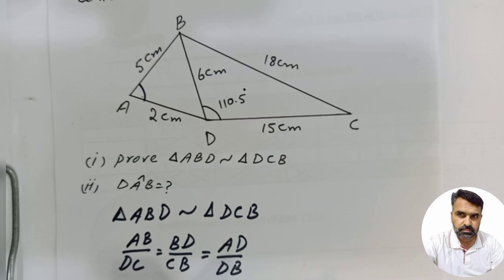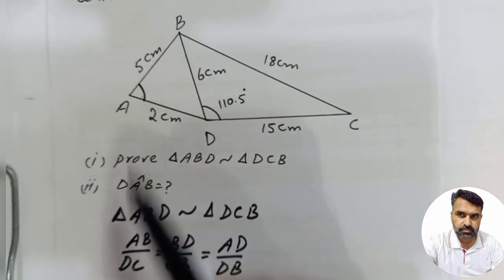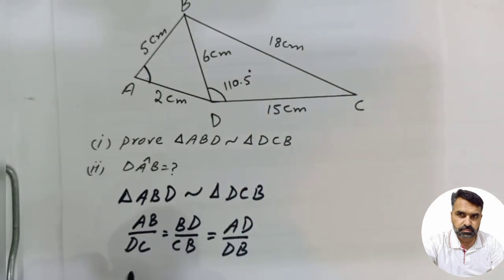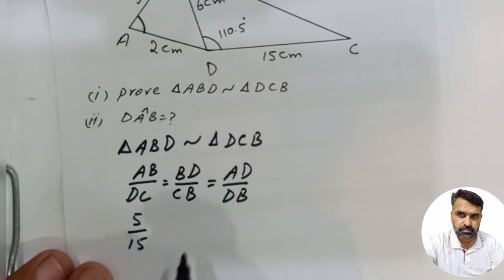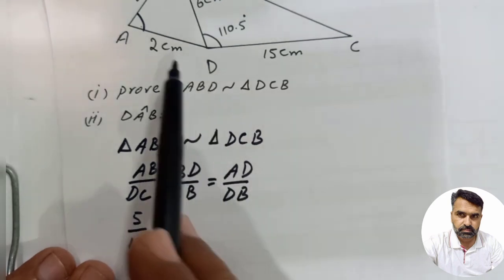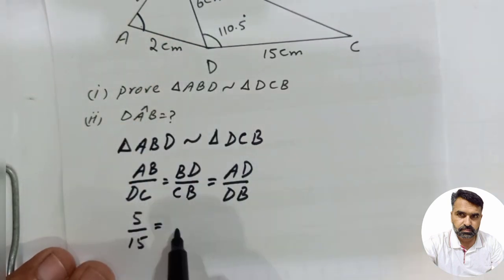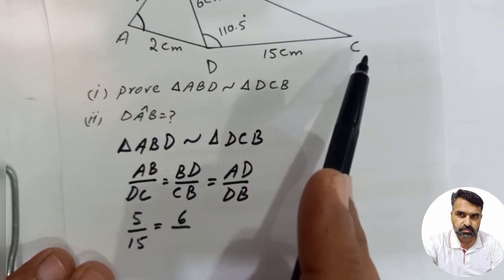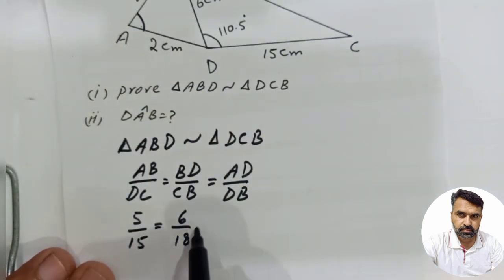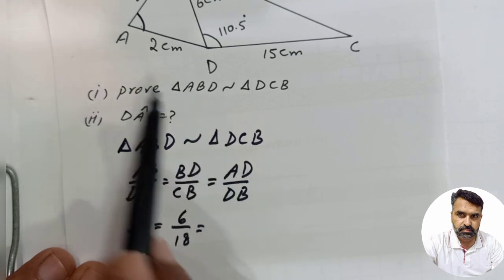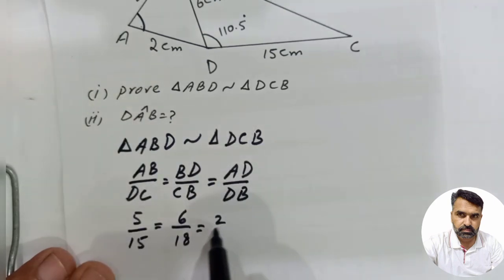AB is 5, DC is 15, BD value is 6, CB value is 18, AD value is 2, and DB value is 6. So we have 5/15 = 6/18 = 2/6.